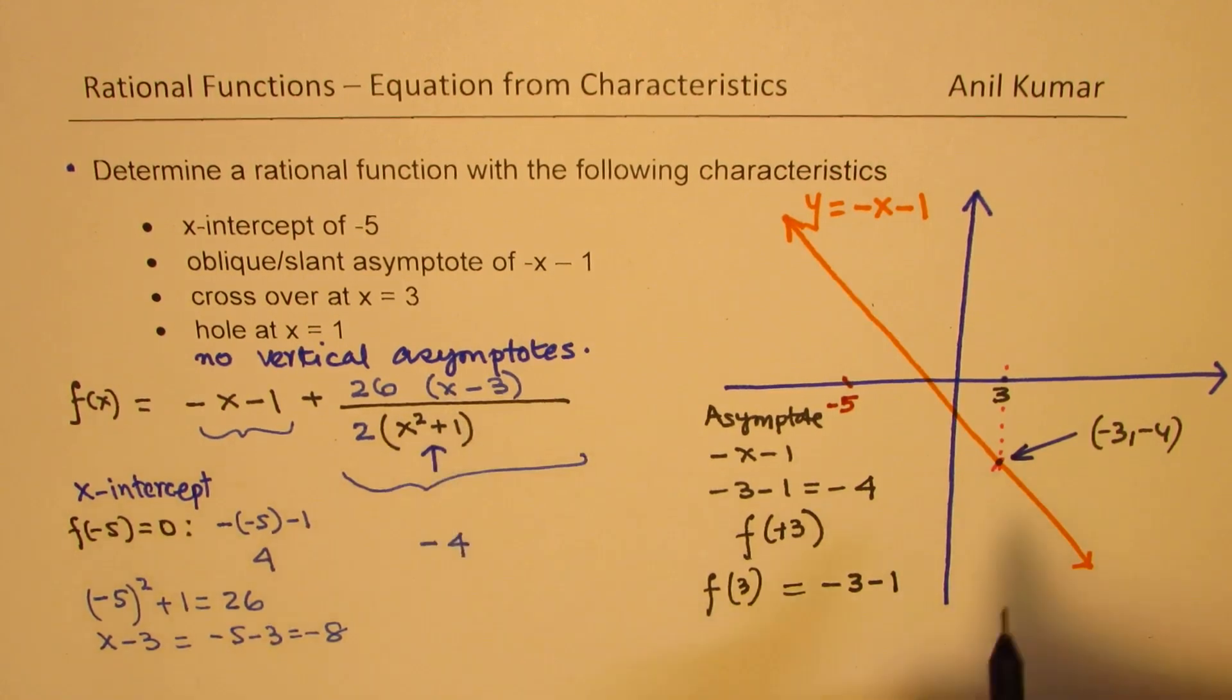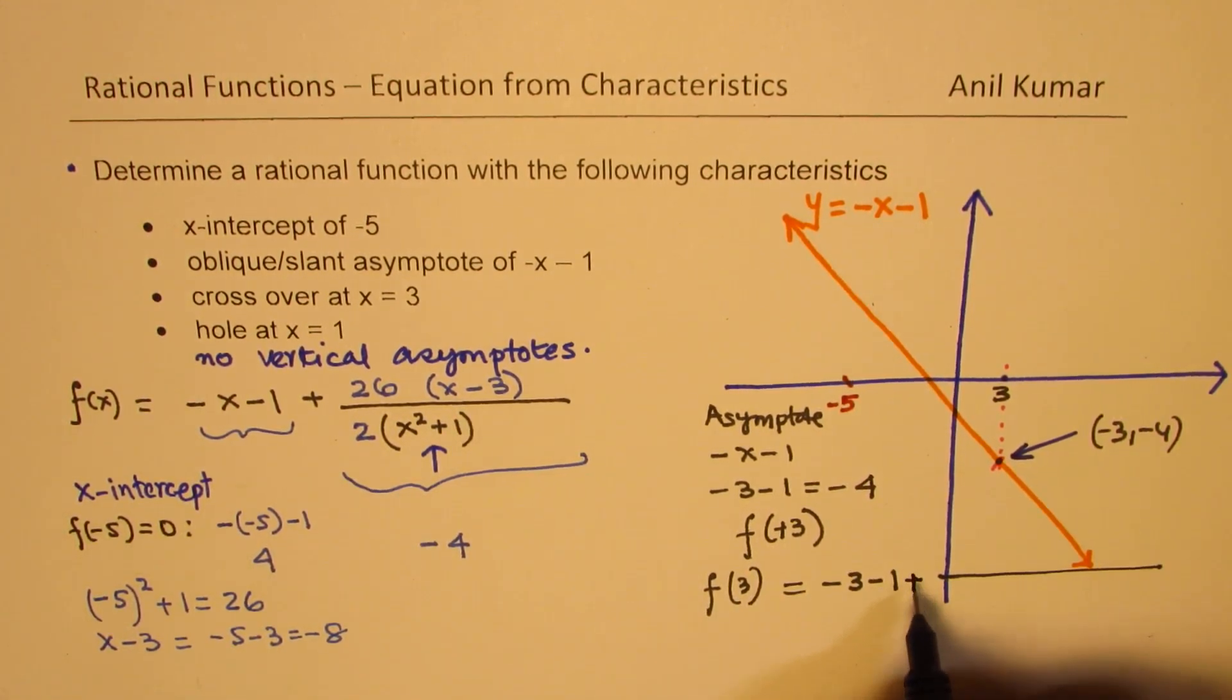So I got this, and here, as you have seen, that was the trick. If I substitute 3 here, we have got 26 times 3 minus 3, which is 0.